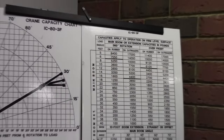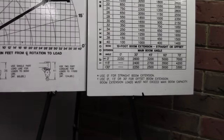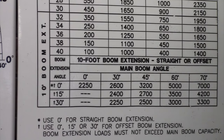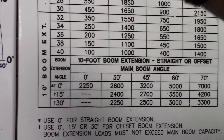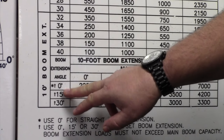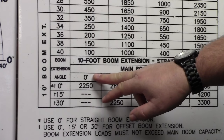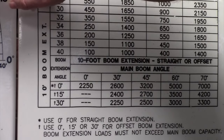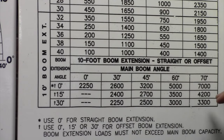When the jib is fitted, use the bottom load chart, which covers the 10-foot jib extension. The jib is there for lifting very light loads to very high heights at the crane's maximum reach. The chart uses the boom extension angle — either 0, 15, or 30 degrees. If the jib is at 0 degrees, use the 0-degree chart; if at 15 degrees, use the 15-degree chart; if at 30 degrees, use the 30-degree chart.